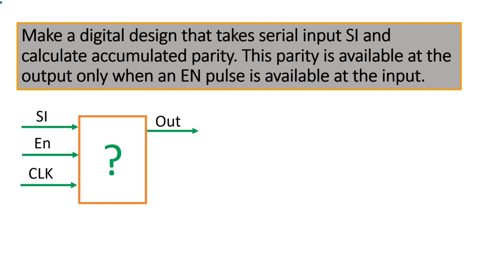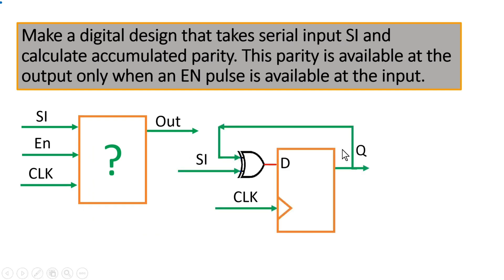Now let me tell you the answer to this question. It's very easy. First of all, you should retain the same circuitry that we created in our first question. I mean to say on signal Q we will keep on accumulating parity, but this parity should be passed to the out signal whenever there is an enable pulse available.